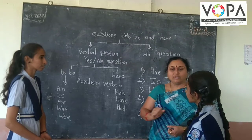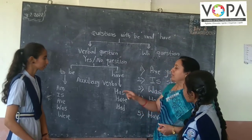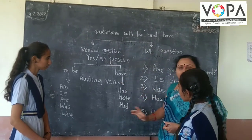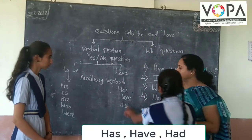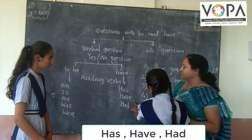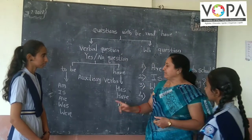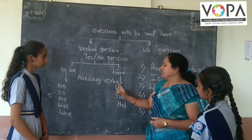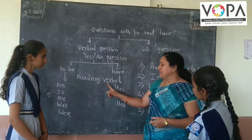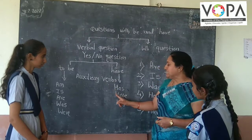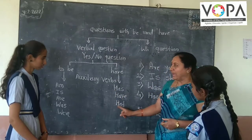Now Ashwada, you tell me the modal auxiliaries of 'have.' Has, have, had. Yes — there are three auxiliaries: has, have, had.